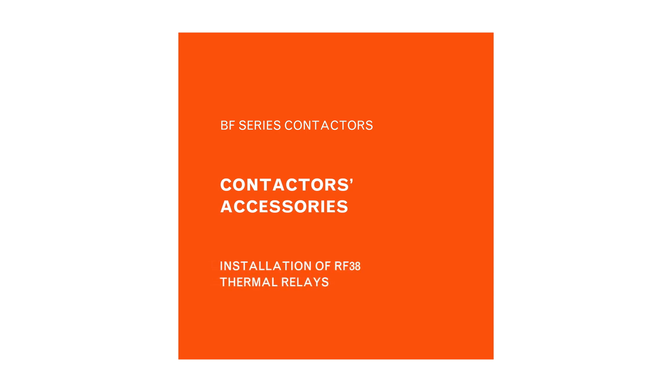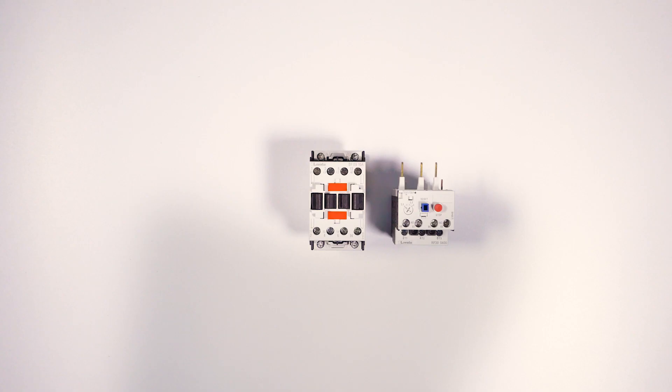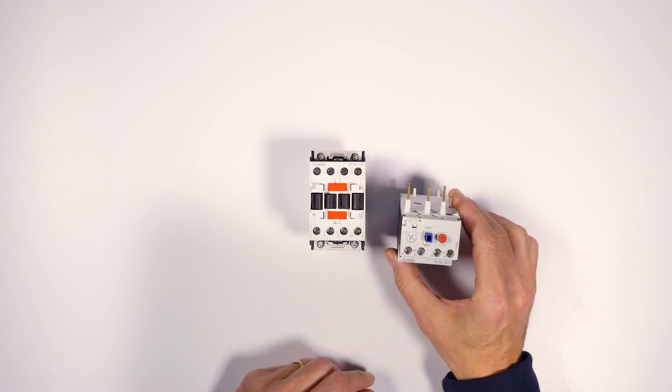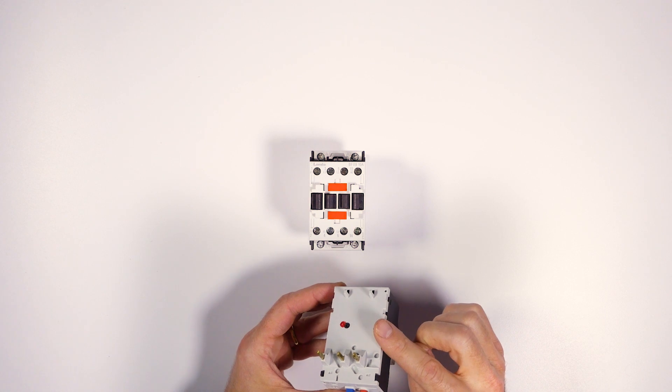It is simple to directly fit our F-series thermal relays on BF-series contactors. Pay attention to this pin. Make sure the screw of the place where it will go is unscrewed.